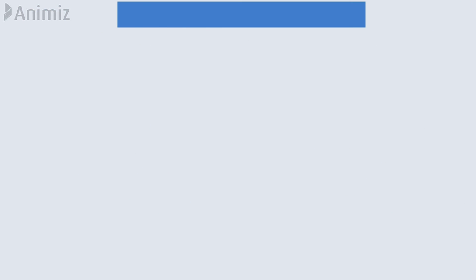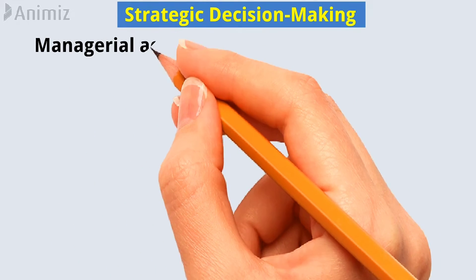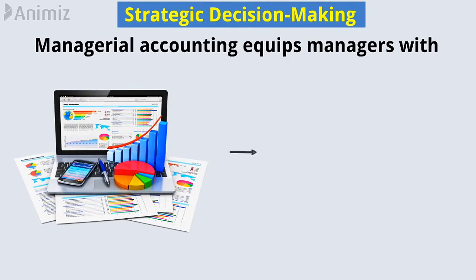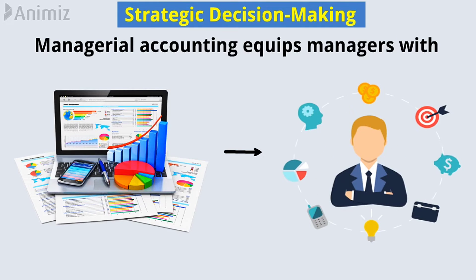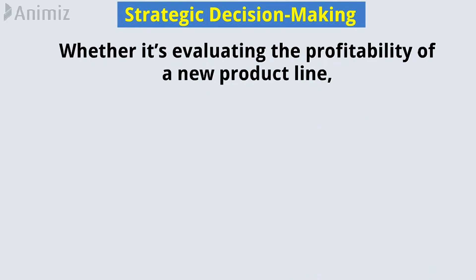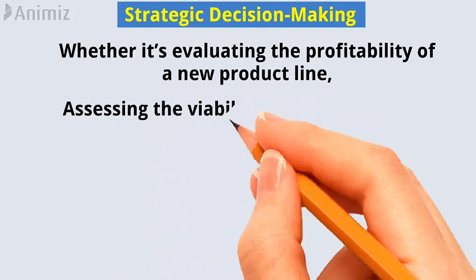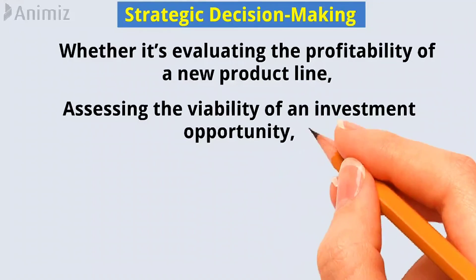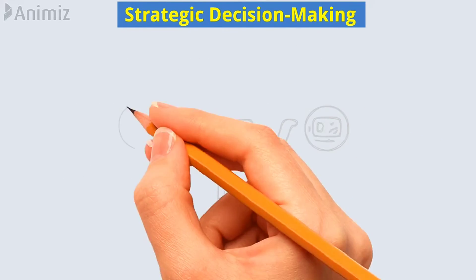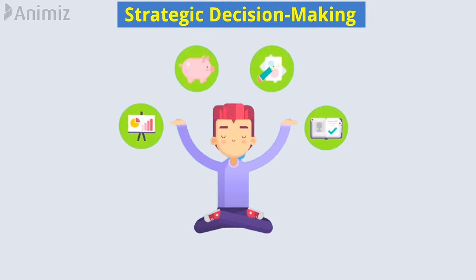Number 4: Strategic Decision Making. Managerial accounting equips managers with the financial insights necessary to make informed strategic decisions. Whether it's evaluating the profitability of a new product line, assessing the viability of an investment opportunity, or deciding on cost-cutting measures, managerial accounting provides the foundation for making sound choices.